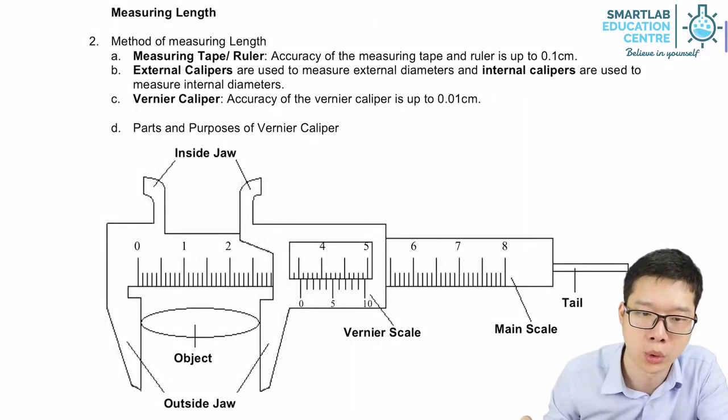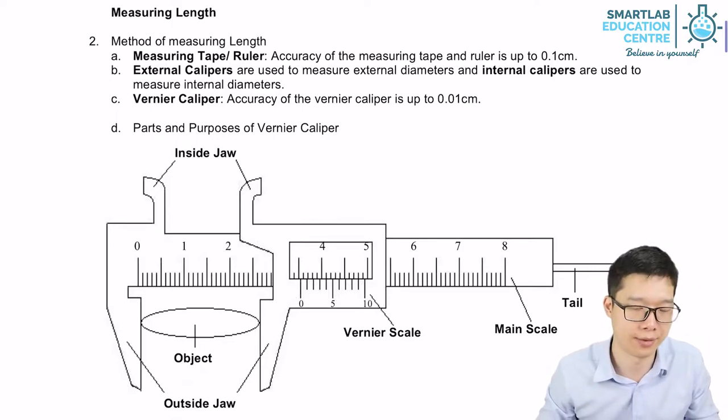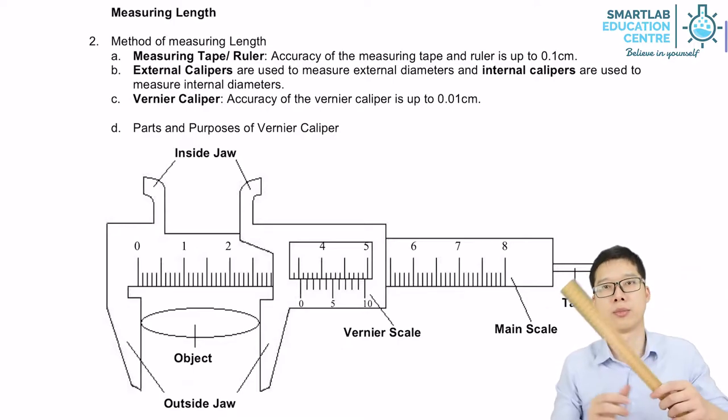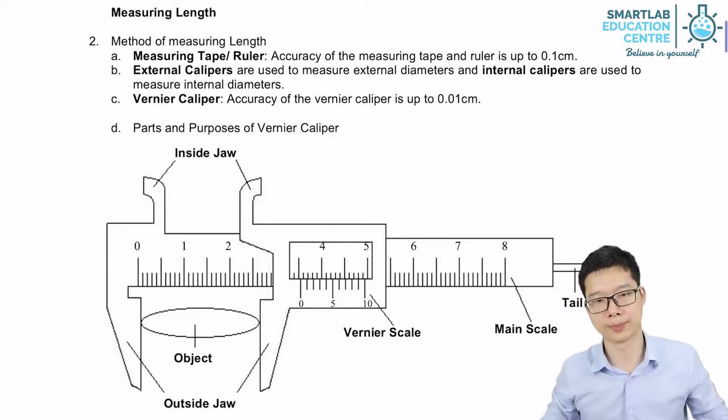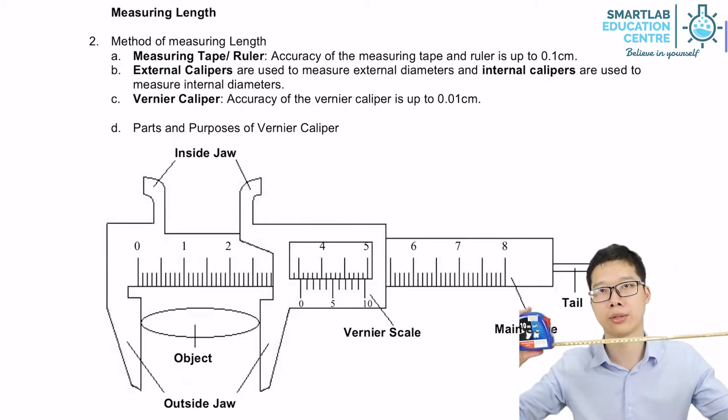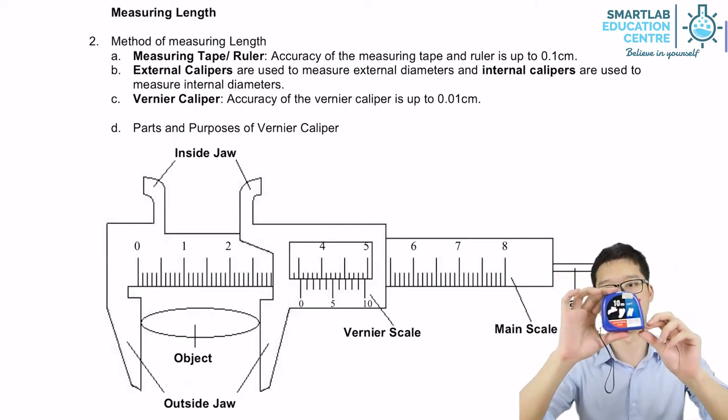Now we want to know the tools of measuring length. The first tool is a ruler, for example this half meter rule. This one is a measuring tape which can measure up to 10 meters.